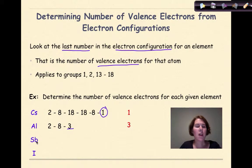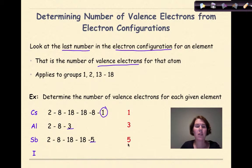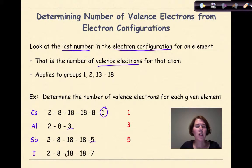Antimony (Sb) has a configuration of 2, 8, 18, 18, 5 — that last number is 5, therefore 5 valence electrons. Iodine is 2, 8, 18, 18, 7 — the last number is 7, therefore 7 valence electrons. Those are examples of looking at electron configurations and figuring out how many valence electrons each has.